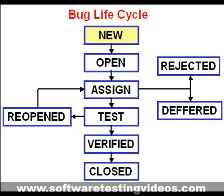When the bug is posted for the first time, its state will be new. This means that the bug is not yet approved. After a tester has posted a bug, the lead of the tester approves that the bug is genuine and changes the state to open.